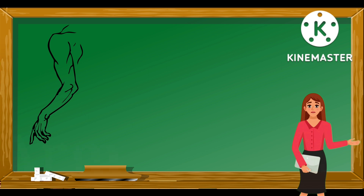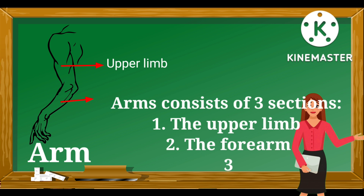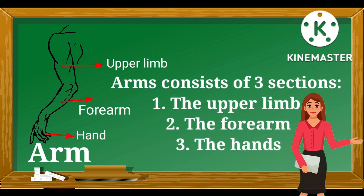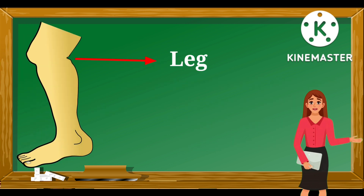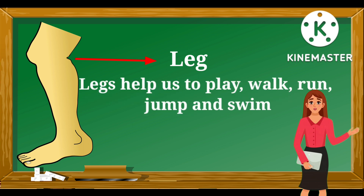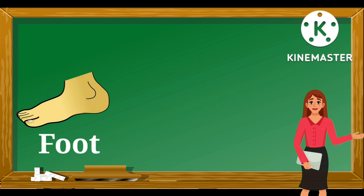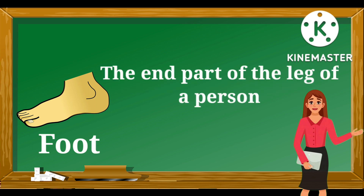This is an arm — A-R-M. Arms consist of three sections: number one, the upper limb; number two, the forearm; and number three, the hands. Arms allow us to do big movements like straightening your elbow or raising your arms above your head. This is a leg. It helps us to walk and stand. The end part of the leg of a person is a foot.